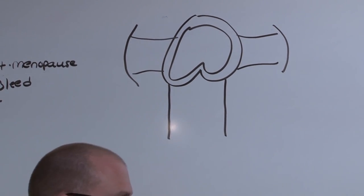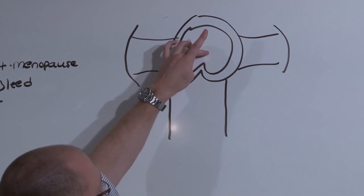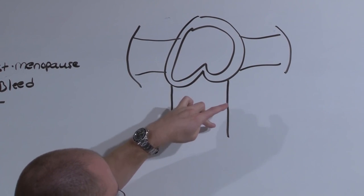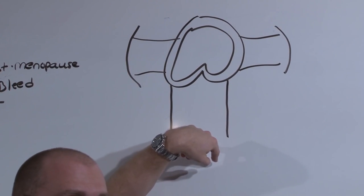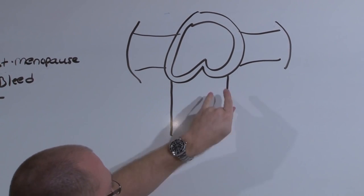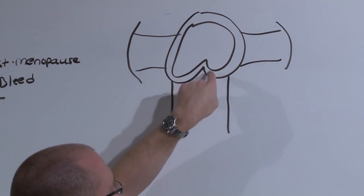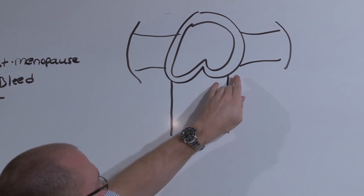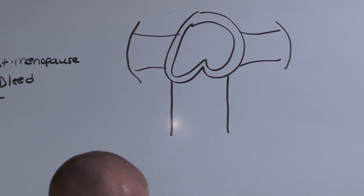As a general rule, as the stage increases, the distance further down the vagina increases. To go from stage A to stage B, you move out. To go up stage, you go down the vagina. To go A to B, you go out.